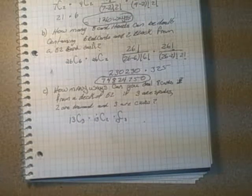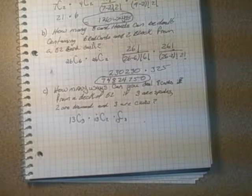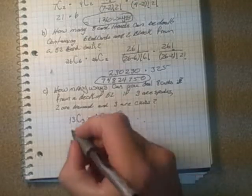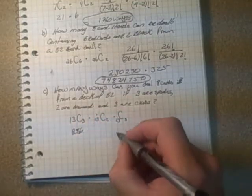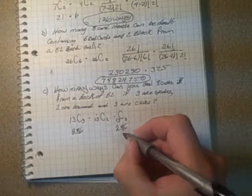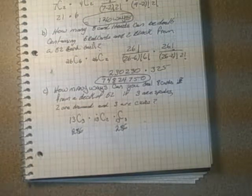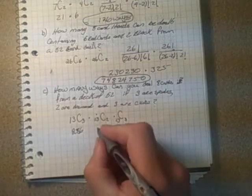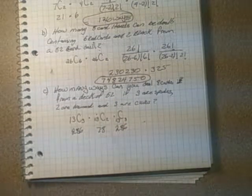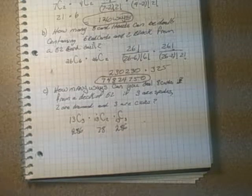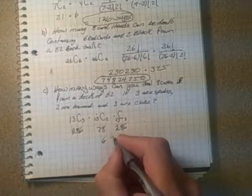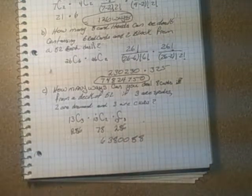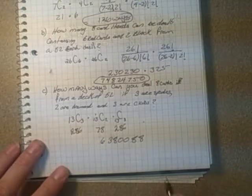So 13C3, 286, and 13C2, 78. So we multiply those together to get 6,380,088 ways.